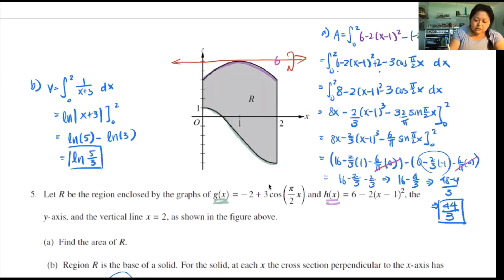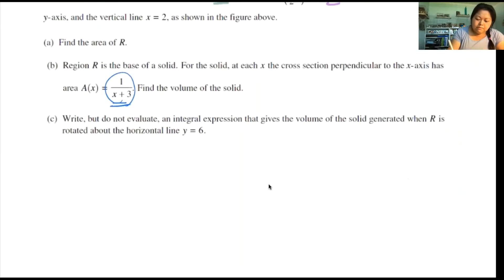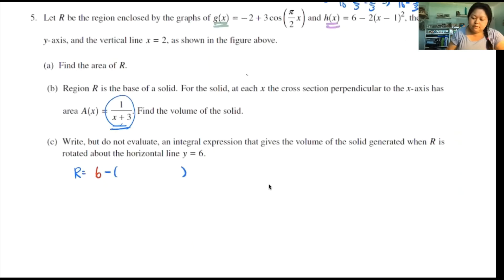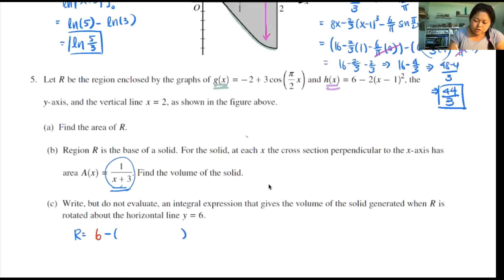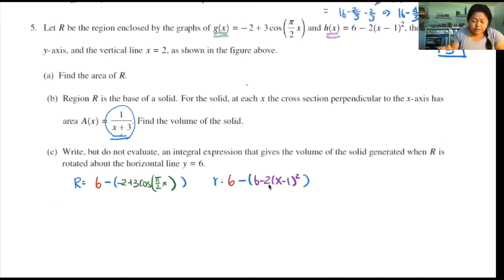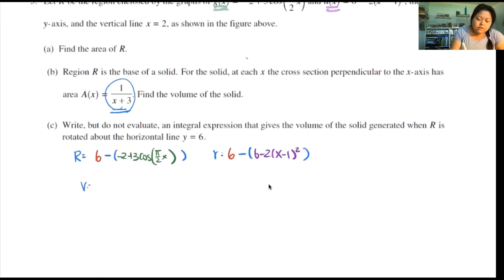So it's going to be this 6 minus g(x). And then your small radius is going to be 6 minus h(x). So big radius and small radius. So let's write that out first. So the big radius, so big radius is the axis of revolution 6 minus my g(x). This is the one farthest. So g(x) is negative 2 plus 3 cosine of pi over 2x. My little radius is going to be the axis of revolution again minus my h(x). My h(x) is 6 minus 2(x minus 1) squared.